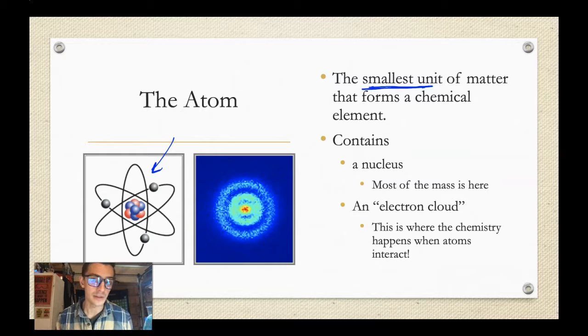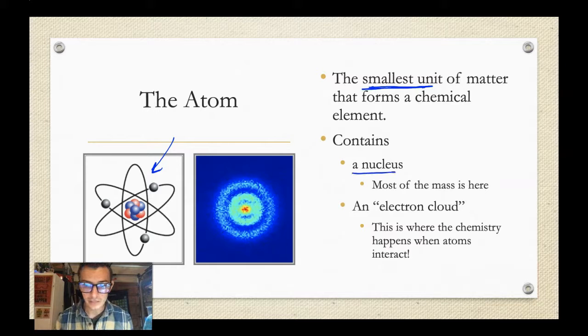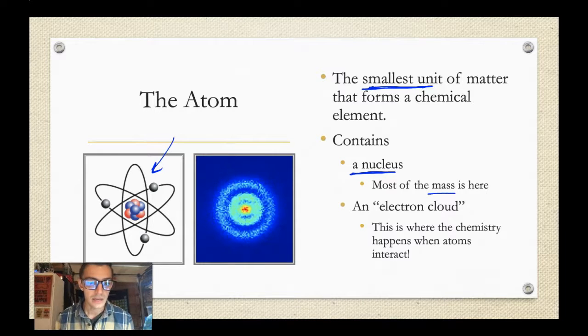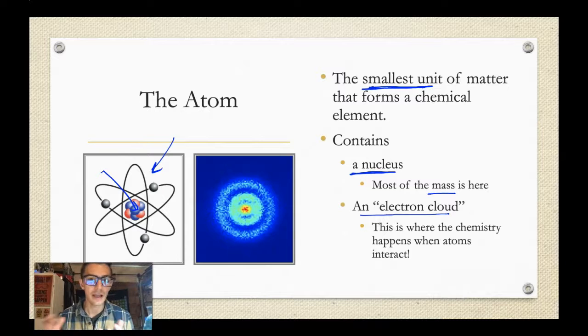So it's the smallest unit of matter that's still technically gold or technically that substance like oxygen or carbon. If you go any smaller, then you start going into the different substances that make up atoms. So you have a nucleus in each atom and most of the mass is actually in the nucleus. And there are components that we'll learn about in just a second. Those are the blue and the red dots here.